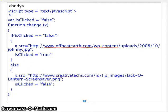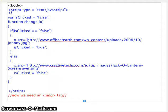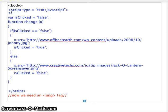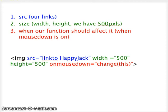Here is the body section of our code so far. Now we need to add an image tag to the body section and define certain aspects of it. This tag will be in the body portion of the HTML. We need to define: one, the source.